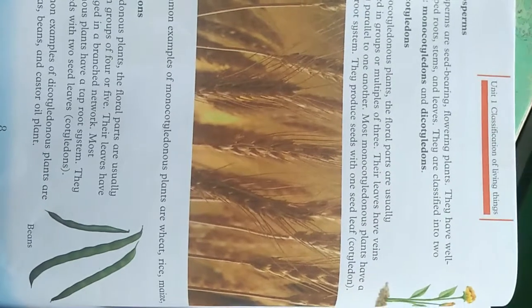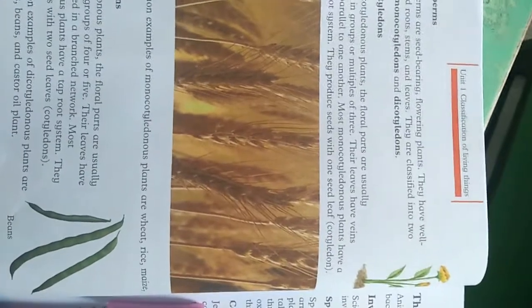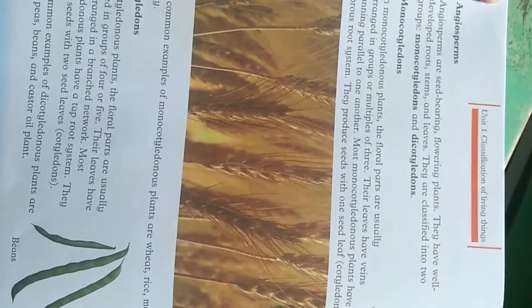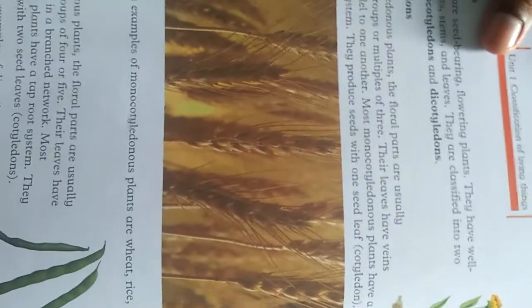Monocotyledons produce seeds with one seed leaf, called a cotyledon. You can see a wheat plant as an example. Some common examples of monocotyledon plants are wheat, rice, maize, and lily.